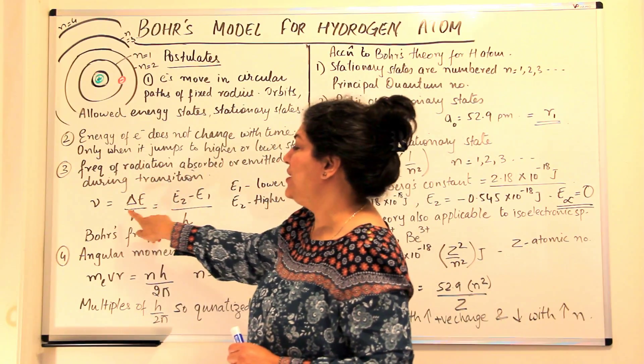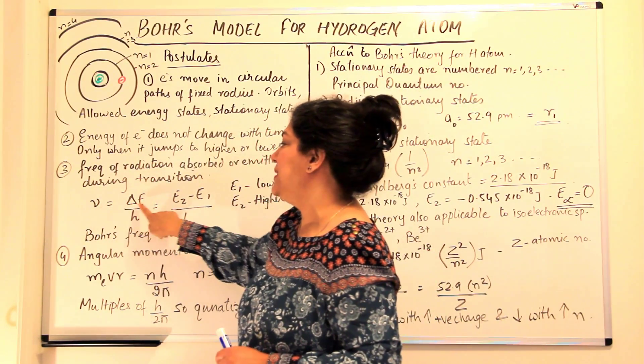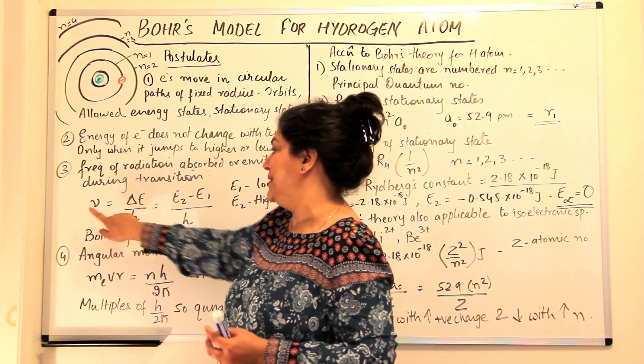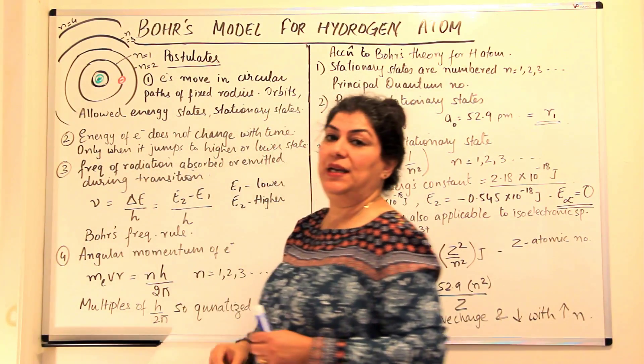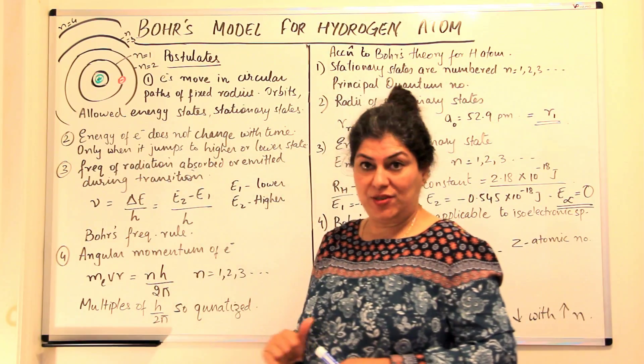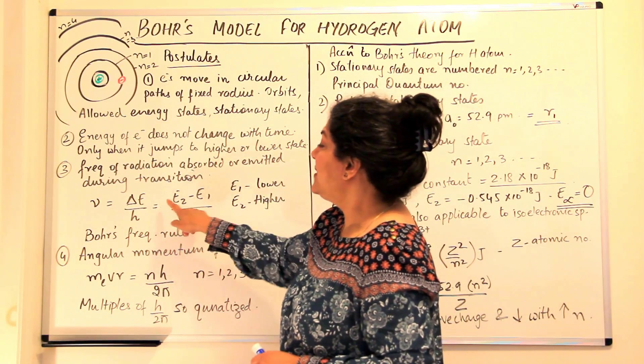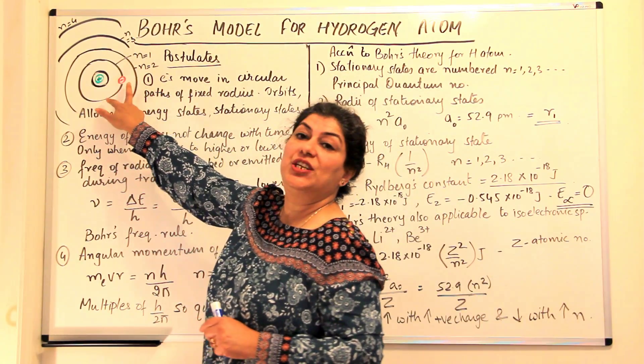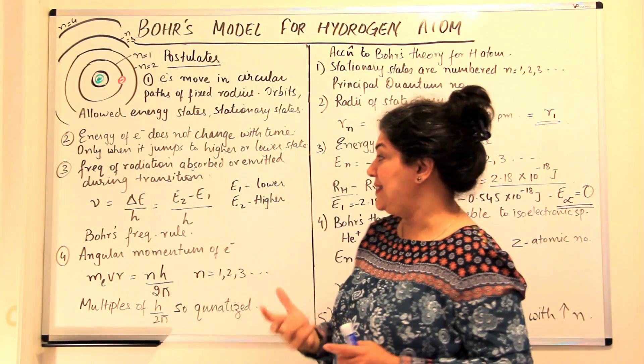And you can calculate mu, that is the frequency. So frequency would be equal to delta E upon H where H is the Planck's constant and delta E means it's the difference between the energy of two different energy levels or stationary states.